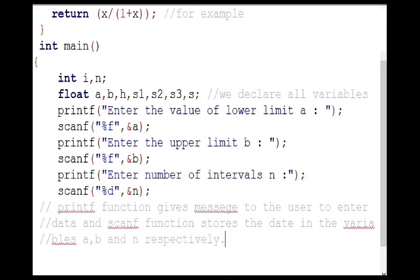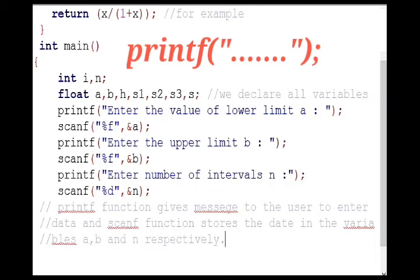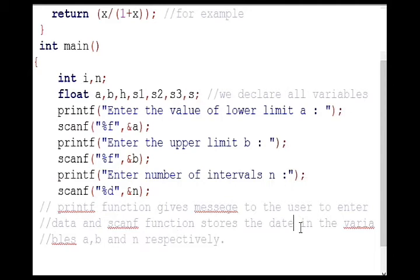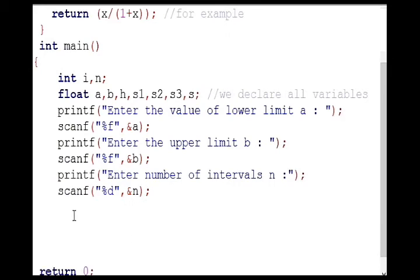Whatever you write within the double quotation in printf function will be shown in the output screen, and printf and scanf functions must be ended with a semicolon, otherwise the program won't run. Now we will write the calculation part. First, h equals (b-a)/n, formula for h.